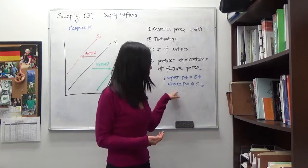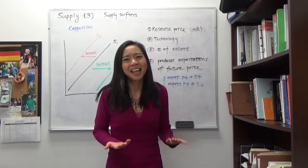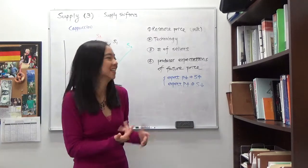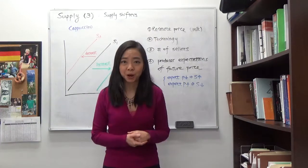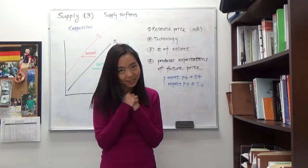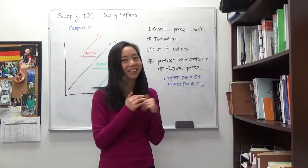And by contrast, if you expect the price to go up later, then you kind of want to hoard it and wait until the price goes up, then you'll sell it. So if you expect the price to go up later, then your supply is going to go down now because you want to hoard it and wait until the price goes up, then you're going to sell it.